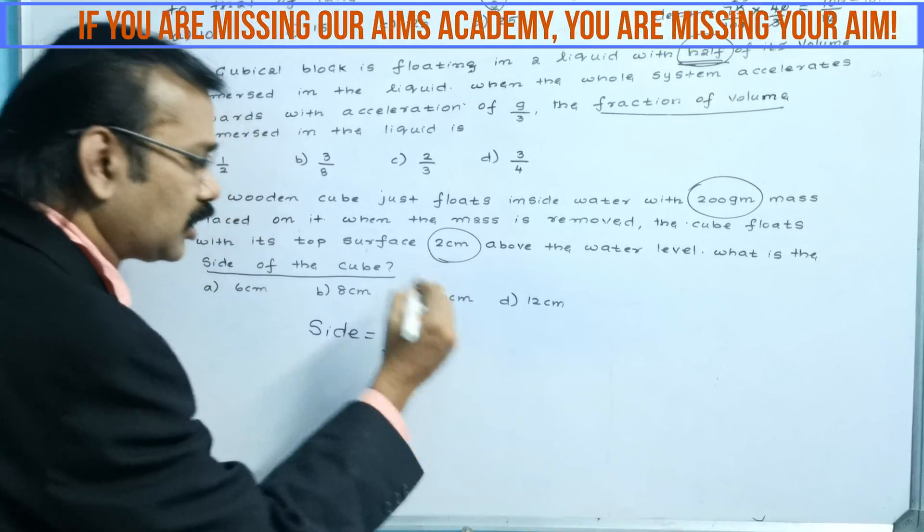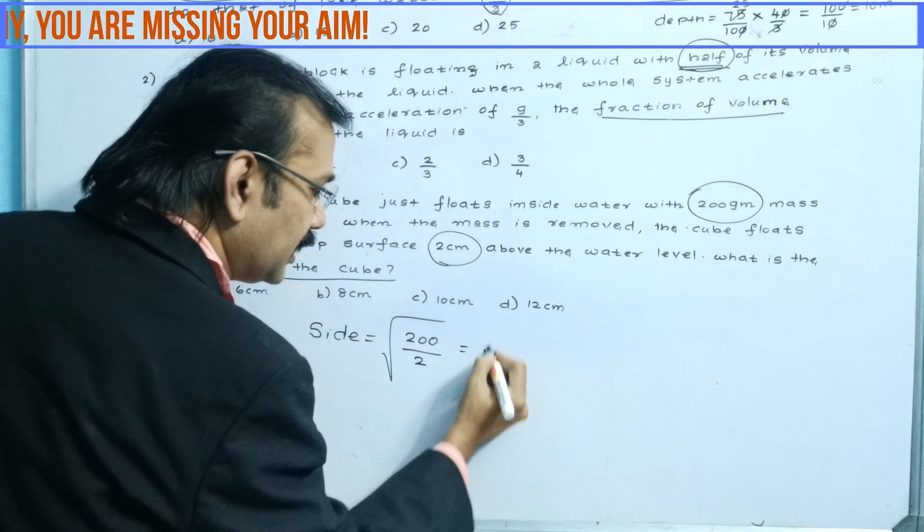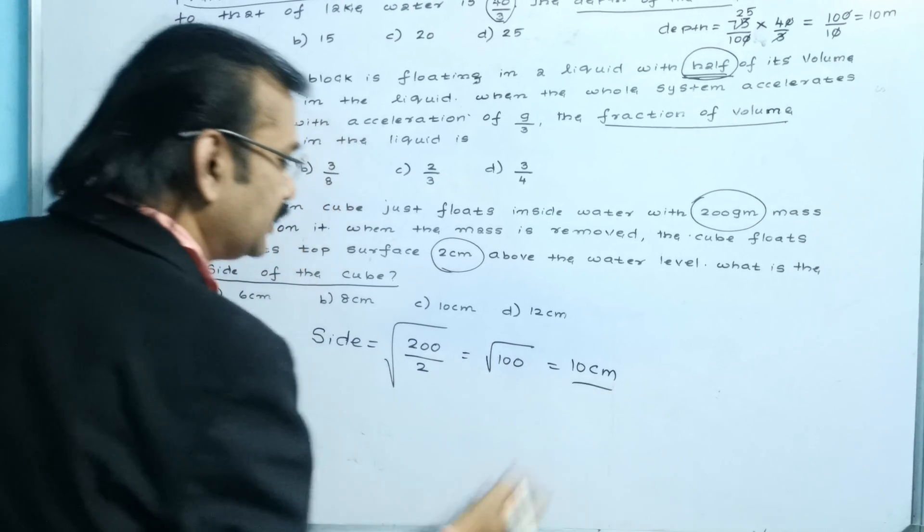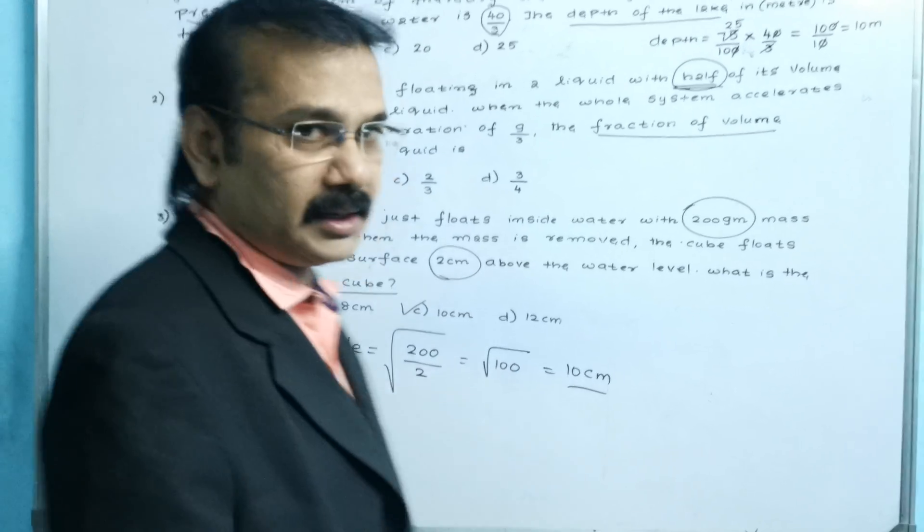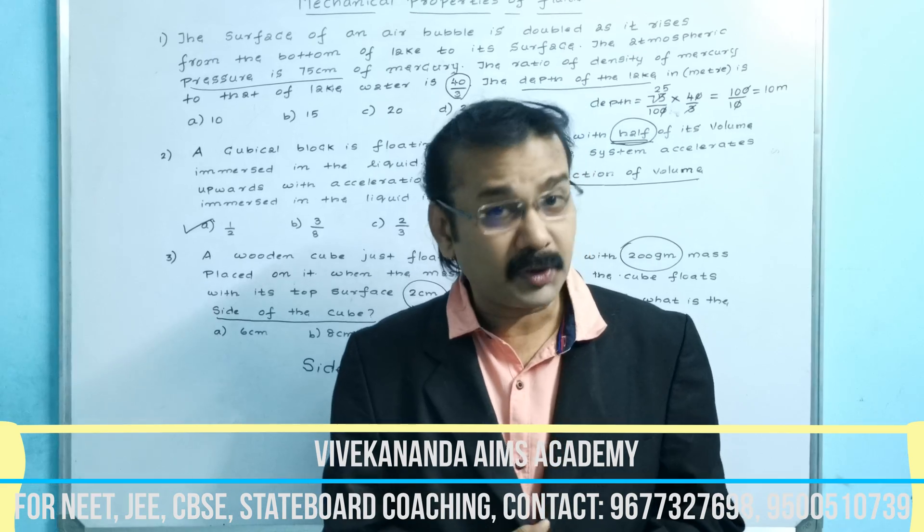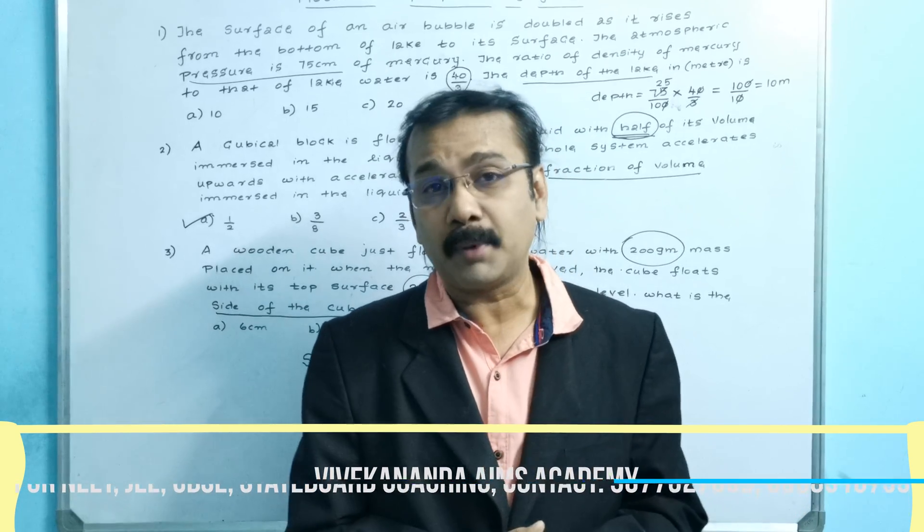To find the side, you take the square root of 200 divided by 2. You will get immediately 100. So square root of 100 is 10 cm. Where does the option lie? The option lies in C. See here, with a single step we got the answer. How to find the side of the cube in the mechanical properties of fluids?